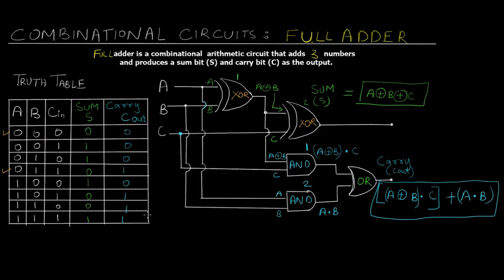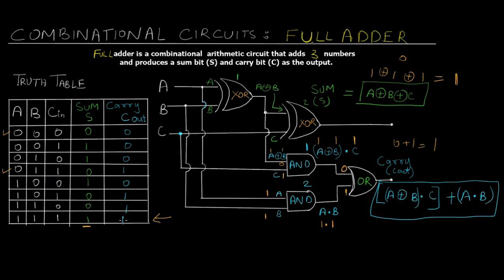Finally, let's see the last case where all three inputs are 1,1,1. For the sum: 1 XOR 1 is 0, and 0 XOR 1 is 1 — so sum is 1. For the carry: 1 XOR 1 is 0, and 0·1 is 0, so the output of the first AND gate is 0. The second AND gate gives 1·1 which is 1. The OR gate receives 0 and 1, giving 0 OR 1 equals 1. So carry is also 1. This is the unique last case where all three inputs are high and both sum and carry are 1.